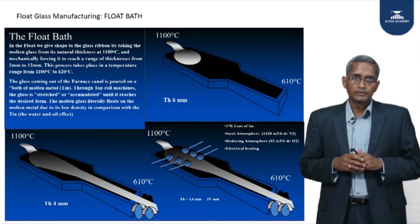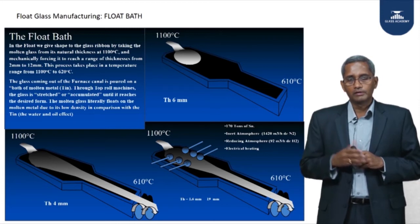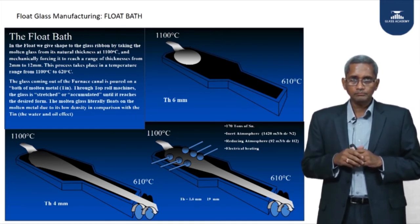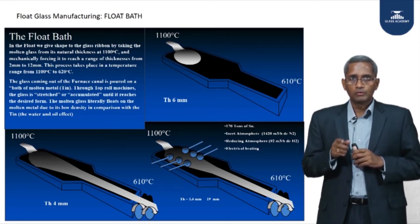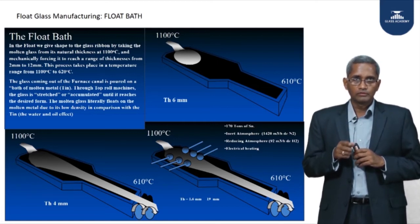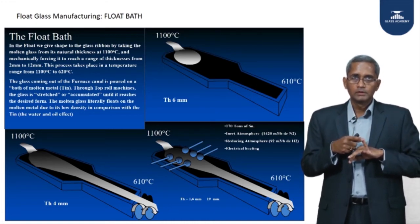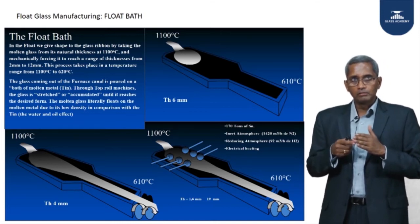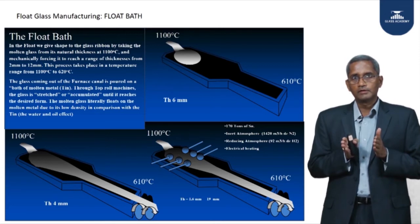This is done using top roll machines — typically 3 pairs shown in the picture, though some float lines use as many as 10. The top roll machine has a cylindrical head that goes inside the bath and nips into the top of the glass on both edges. It can rotate — in an anti-clockwise direction — to push the glass forward, with controllable speed. The angle can also be opened outward to stretch the glass, or set to a negative angle to push the glass inward and make it thicker.